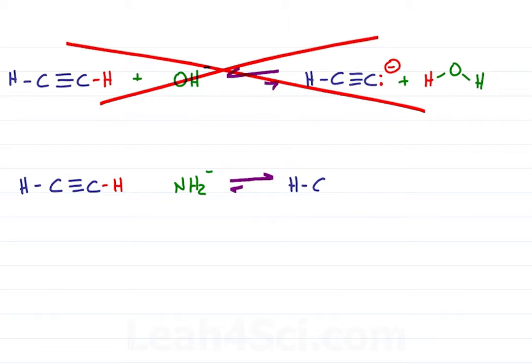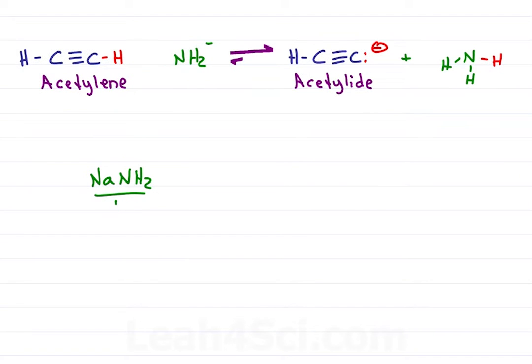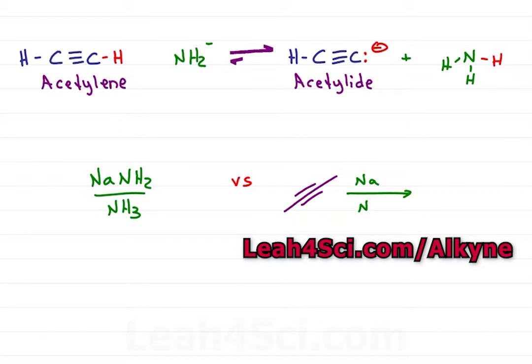This will turn my acetylene into a deprotonated acetylide anion. Yes, know these names. You'll see this written as NaNH2 in NH3, not to be confused with Na in NH3, used for dissolving metal reduction to get a transalkene.